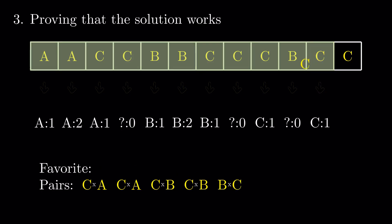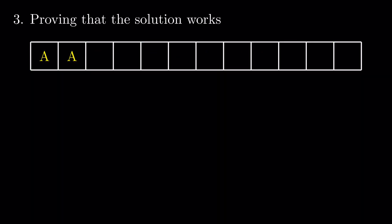We can use this property to prove that the algorithm produces the mode of the vector. Let X and k be the favorite and the counter at the end of the vector.